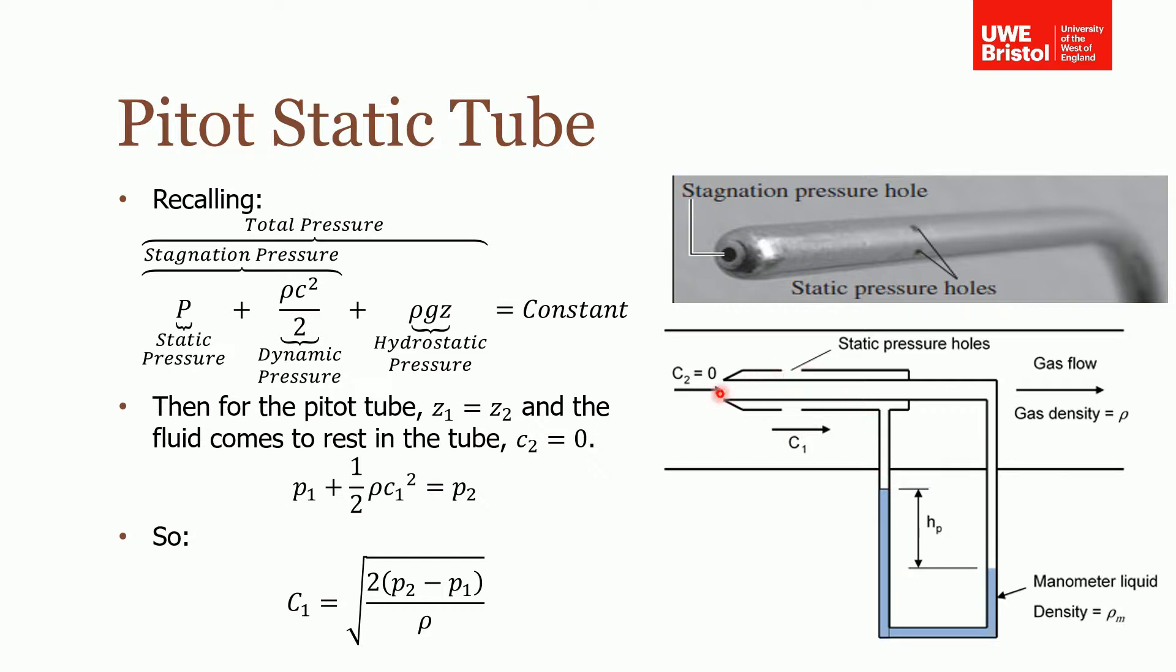So how does this work? Well, if we remember Bernoulli's - the theory's over here. Bernoulli is made up of three terms: the static pressure, dynamic pressure, and our potential or hydrostatic pressure term. The sum of those is the total pressure, and the sum of these two - the static and the dynamic - is the stagnation pressure. This all equals a constant.